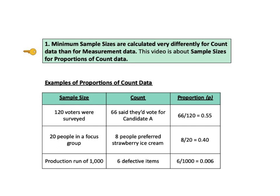One might intuitively think that a production run with 1,000 items should give accurate results. But what about the other two? How confident are we about the results of a survey of 120 people, or the preferences of 20 people in a focus group? Should we get bigger samples? Those questions are exactly what this video is about.